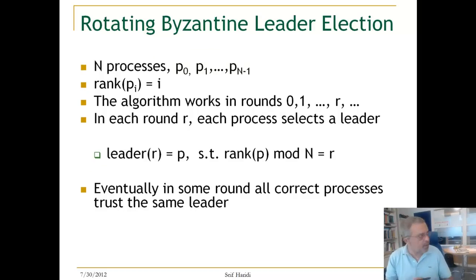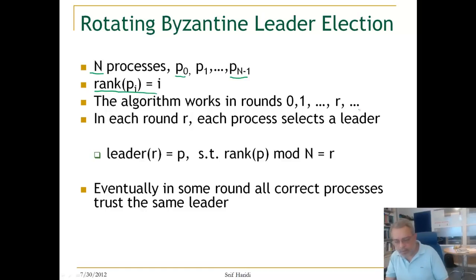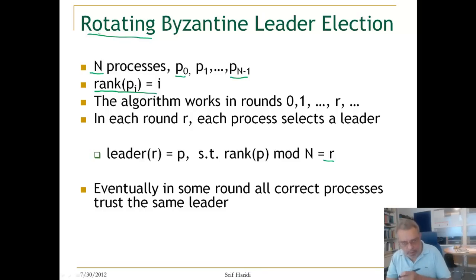Let us look at an algorithm called rotating Byzantine leader election. We have n processes P0 to Pn-1, each with a rank. The algorithm works in rounds 0, 1, etc. In each round R, each process selects a leader: the leader of round R is P such that the rank of P modulo N equals R. That is why we call it a rotating leader election algorithm. After round N-1, we move back to P0, then P1, P2 until Pn-1, and so on. Eventually, in some round, all correct processes trust the same leader.